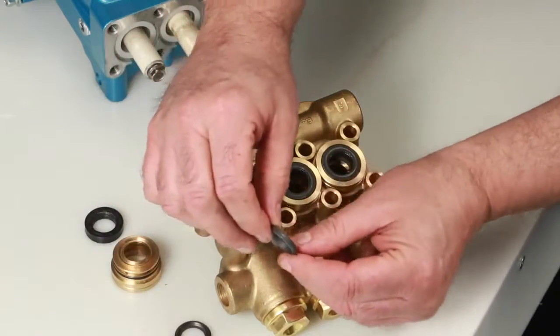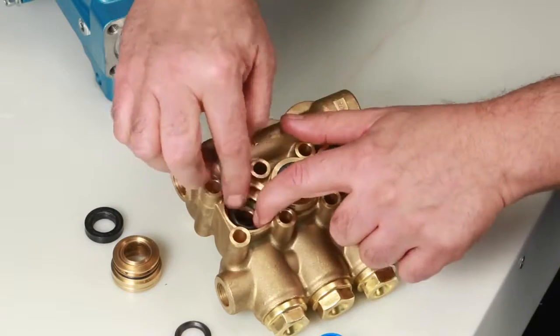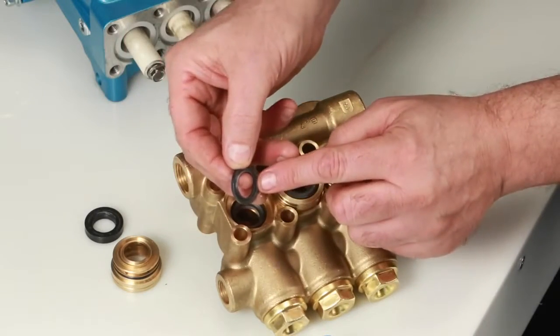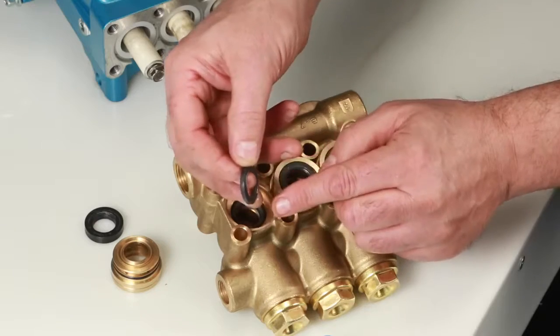Next, install your set of V-packings. Install the V-packings with the groove side down into the manifold, resting on top of the male adapter.